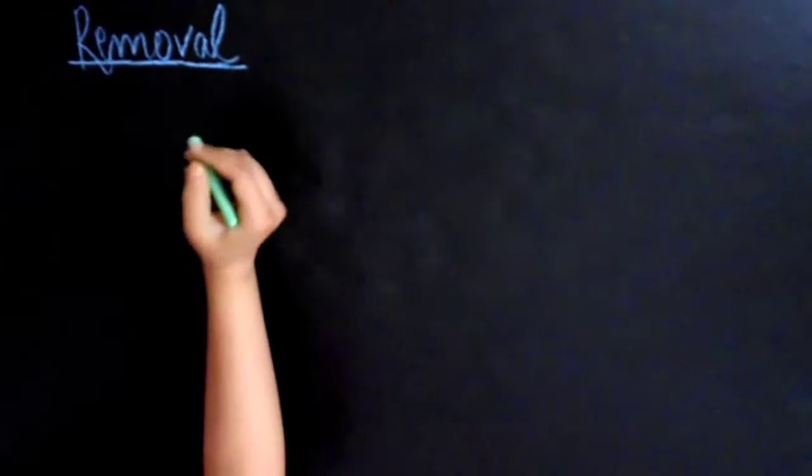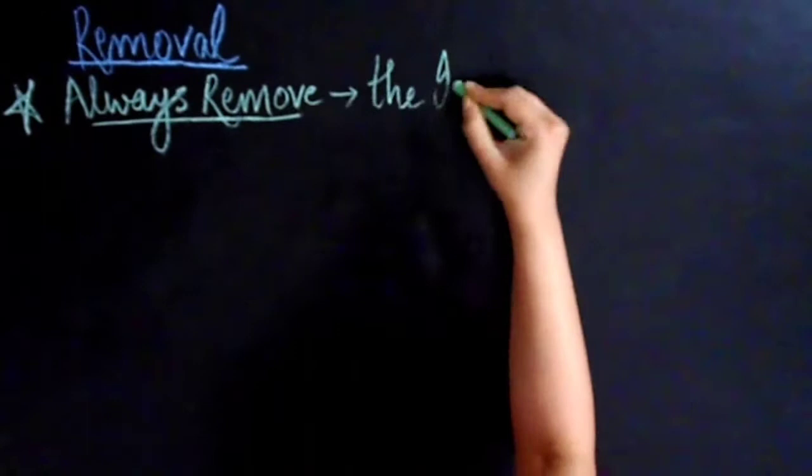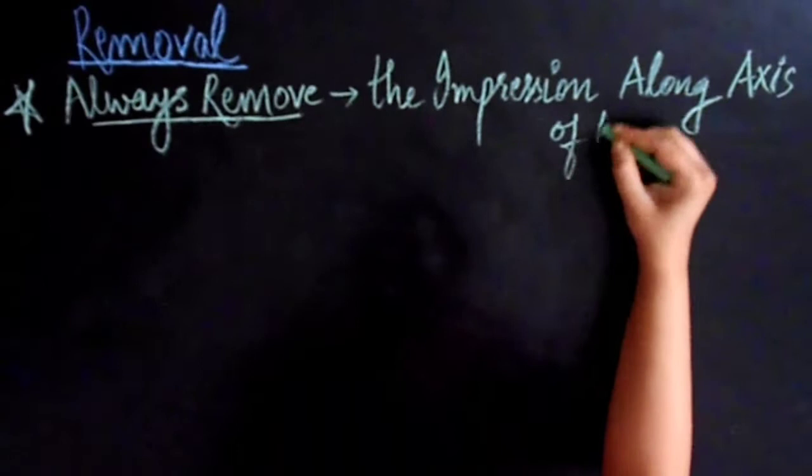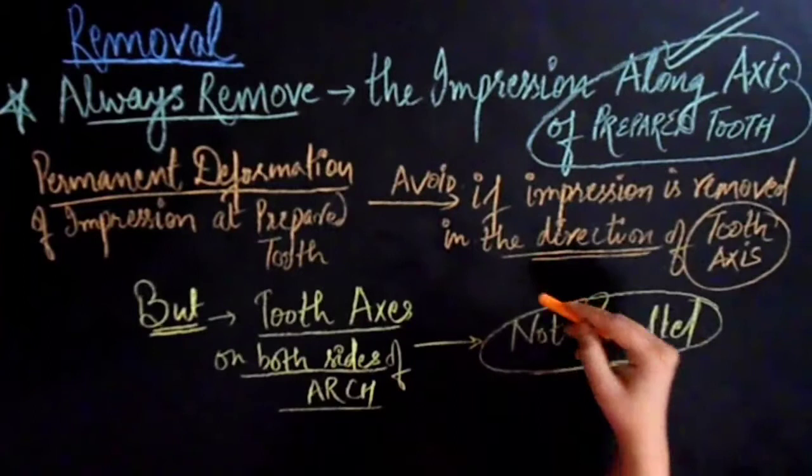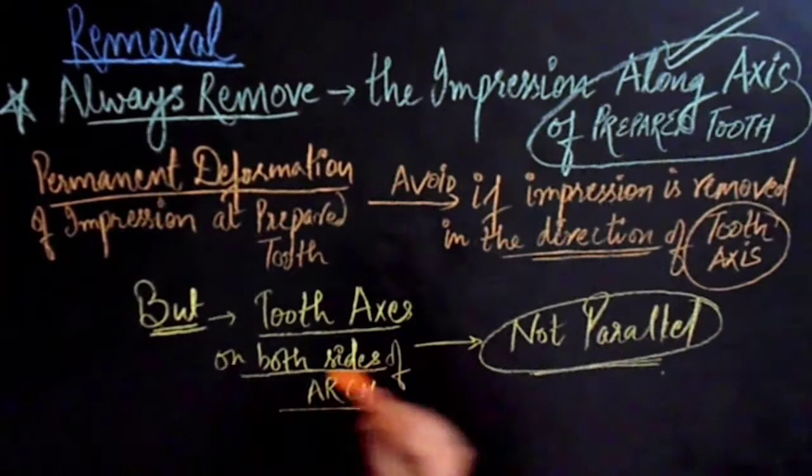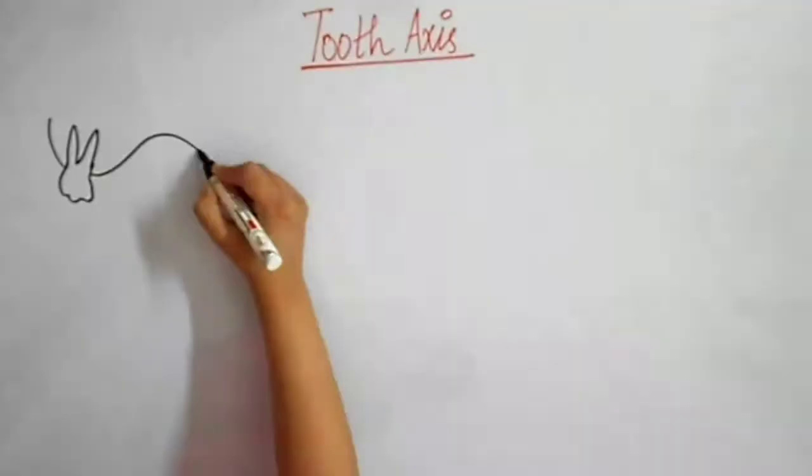Although the removal of impression from patient's mouth seems to be an uncomplicated task, improper removal can result in permanent deformation of the impression material. It's very important that you always remove the impression along the long axis of the prepared tooth. Permanent deformation of the impression at the prepared tooth can only be avoided if the impression is removed in the direction of tooth axis of the prepared tooth. But the tooth axes on both sides of the arch are not parallel.